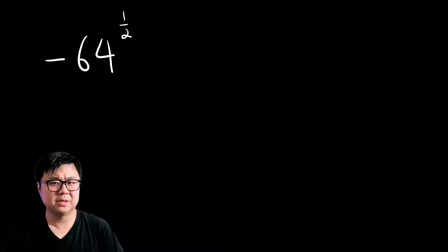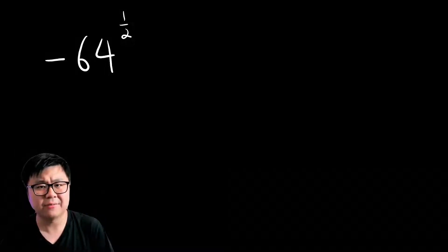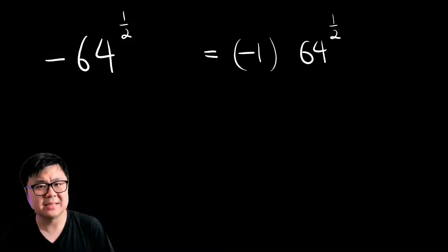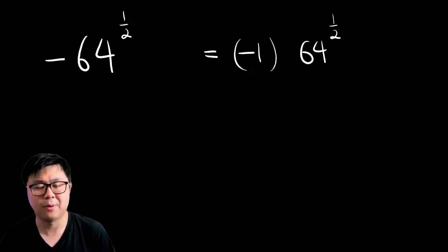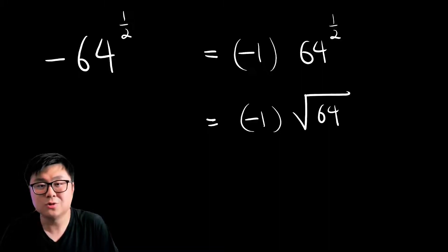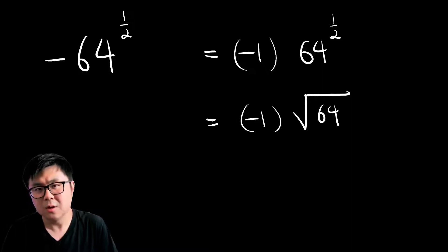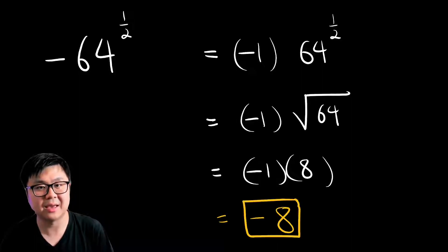Let's start with this example: negative 64 to the power of one-half. The negative sign isn't in a bracket, which means it's not being affected by the power of one-half. So let's write the negative sign as a negative 1 in the very front, multiplied by 64 to the power of one-half. Well, 64 to the power of one-half can be rewritten as a radical — the square root of 64, which is positive 8. So now we have negative 1 times 8, giving us a final answer of negative 8.